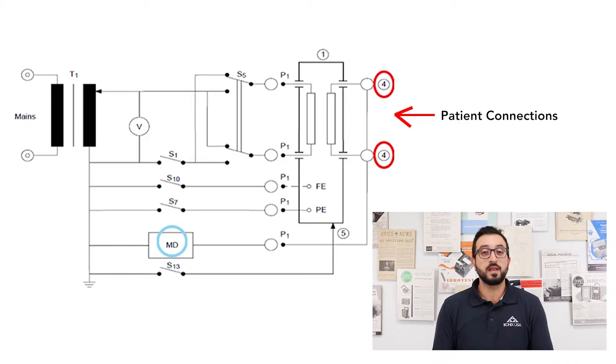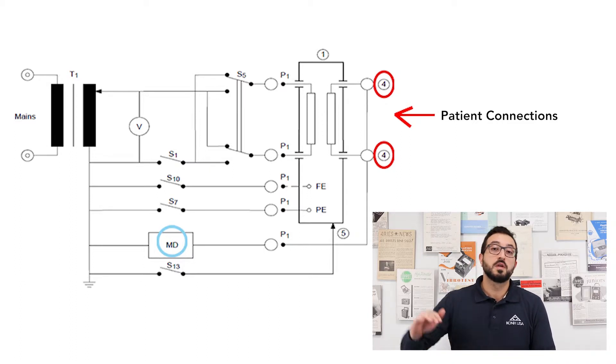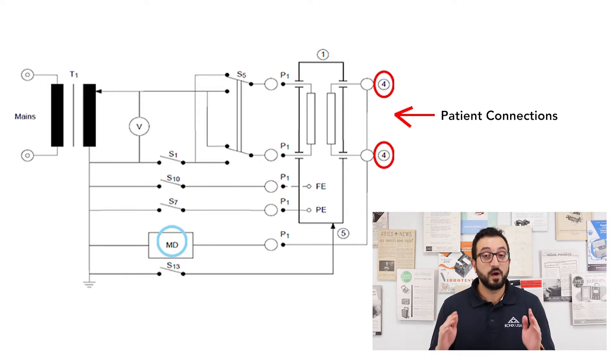So let's take a look at how the medical device standard requires us to measure patient leakage, and in doing so we're going to take a look at two different examples. The first one is for a single patient connection, and we're going to measure the leakage current flowing from that patient connection, going through the measuring device circuit which is simulating the human body impedance, and back to reference or ground.